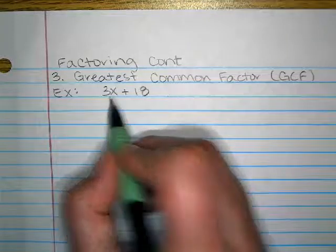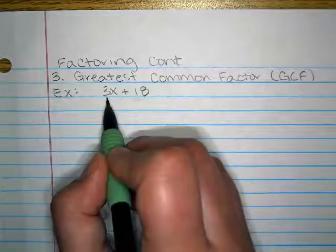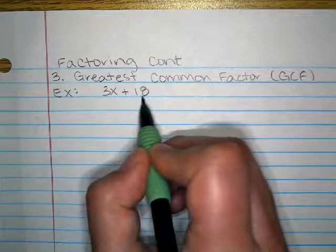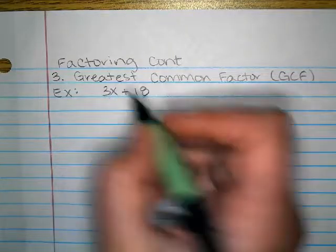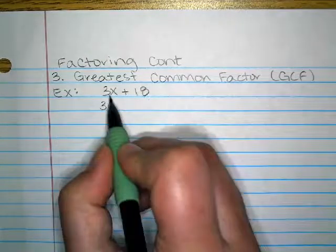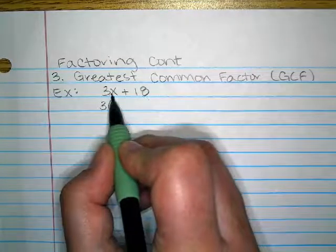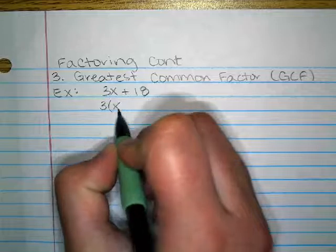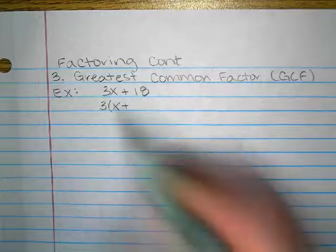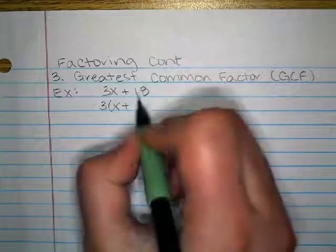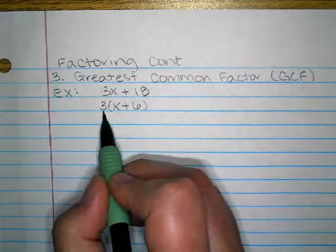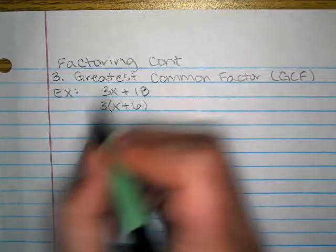If you look at the first two terms here, we can see that the first term, 3x, and the second term, 18, are both divisible by 3. So that means the GCF is 3. For the first term, if you have 3x and you take out the 3, that leaves an x behind. For the second term, if you have 18 and you divide by 3, that leaves a 6 behind. So GCF of 3, the leftovers are x plus 6.